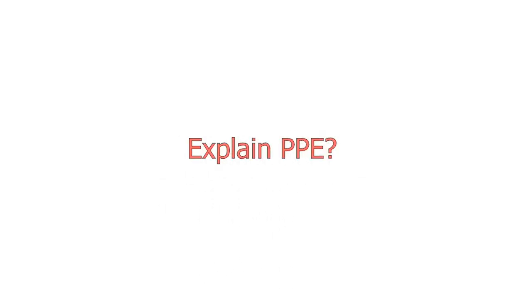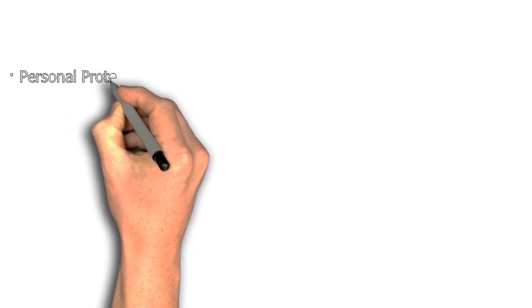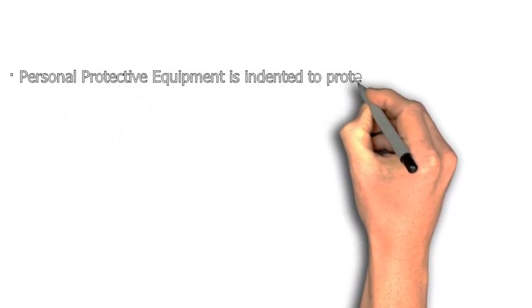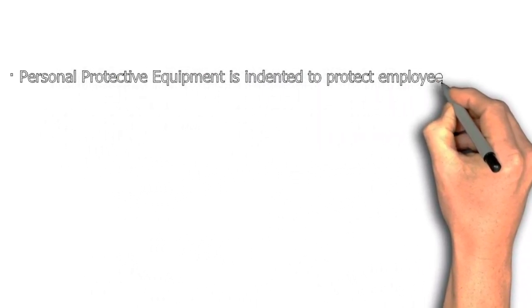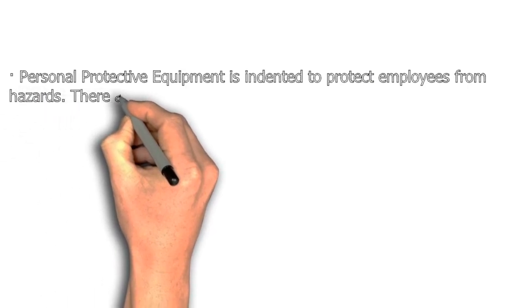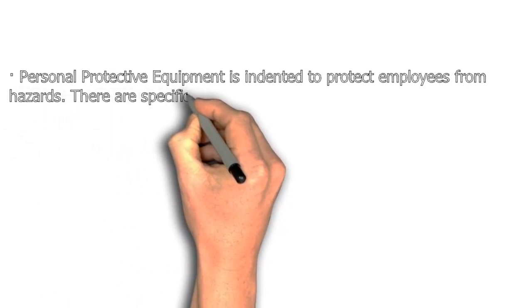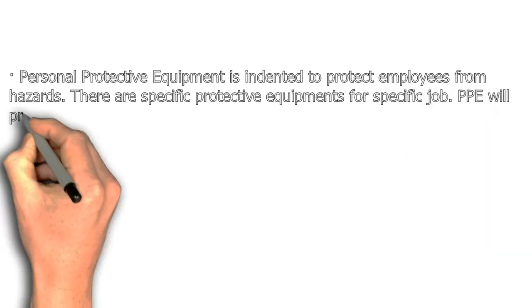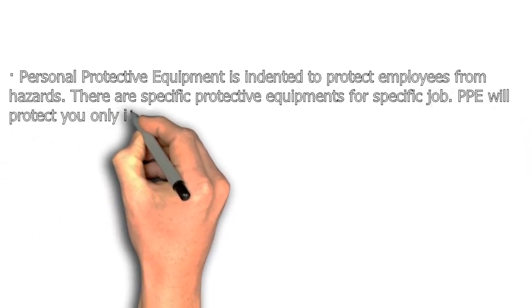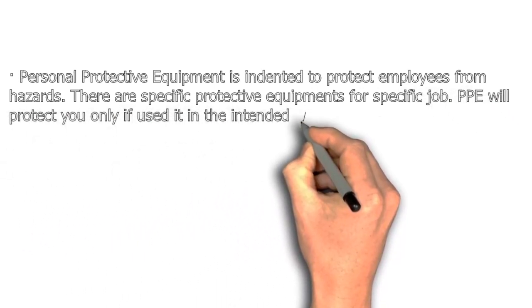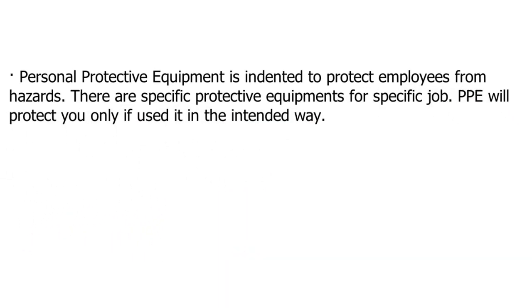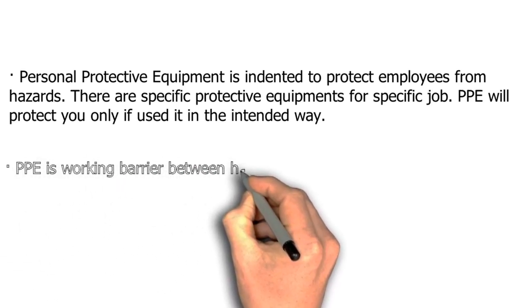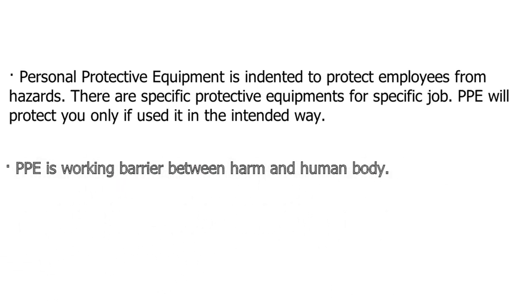Explain PPE. Personal Protective Equipment is intended to protect employees from hazards. There is specific protective equipment for specific jobs. PPE will protect you only if used in the intended way. PPE is a working barrier between harm and the human body.